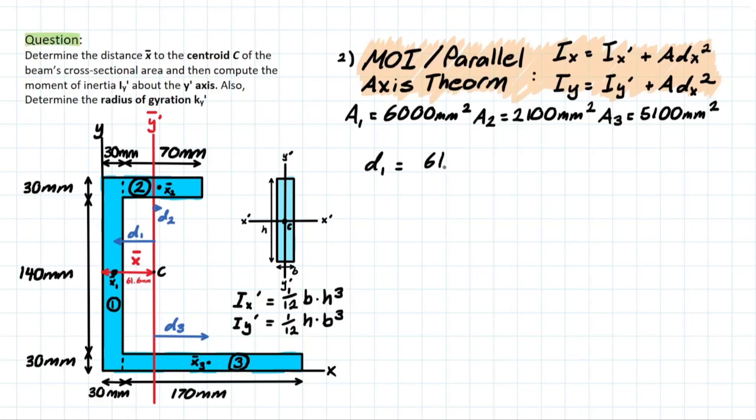And we're going to subtract the centroid of shape one, which is 15 millimeters, which we found previously. All of this is in brackets. And when we solve that, we're going to be left with 46.6 mil.